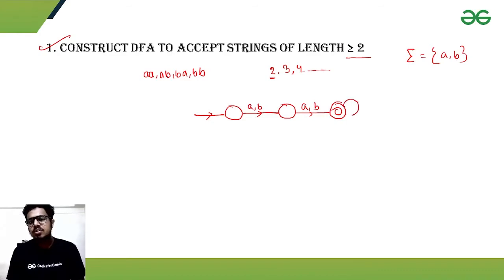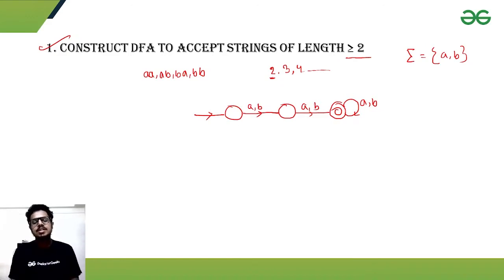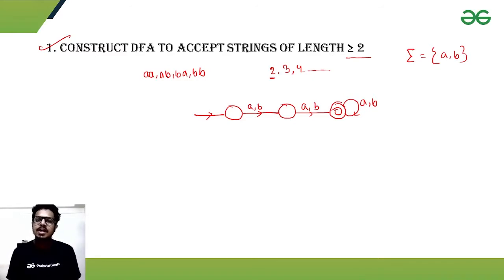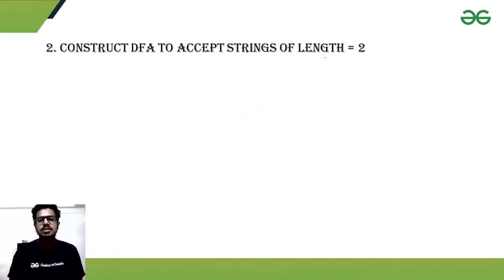Since the DFA should accept strings with length greater than or equal to 2, in the final state, if it sees any 'a' or 'b', it will still be accepted — because we have already fulfilled the basic condition that the string length is at least 2. So in the final state, getting another 'a' or 'b' just increases the length, and it loops back to the final state. We apply this design whenever the length should be greater than or equal to some constant.